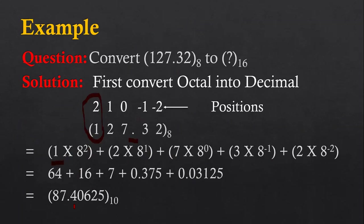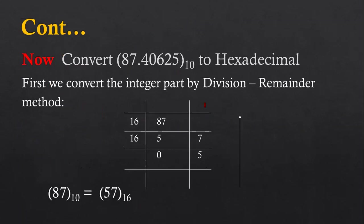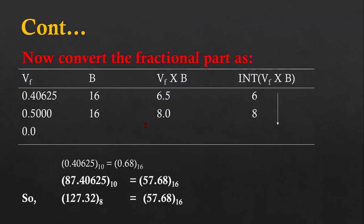Now this decimal will be converted into hexadecimal. First, we convert the integer part 87 using the division remainder method. The result is 57 in hexadecimal form. Now we have to convert the fractional part 0.40625 into hexadecimal. For that, I am going to use the multiplication method which I have already discussed in another video.